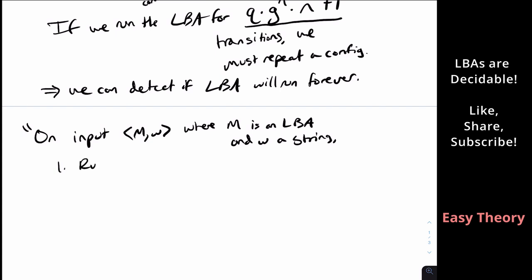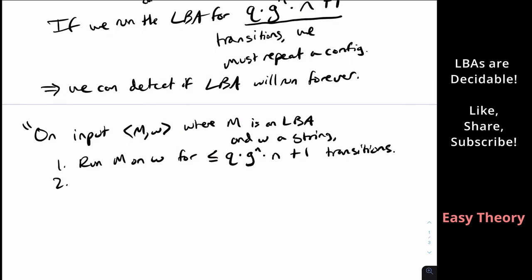Well, what we do is run M on w for at most, and I'll explain why that's there in a second, for at most q times G^n times n plus 1 transitions. Well, why do I have the less than or equal here? Well, that's because the LBA could accept or reject the input in a shorter amount of time. So if the LBA accepts or rejects at this point, rejects before this point, so at this point we can guarantee it won't run forever, then accept or reject as specified by the LBA.